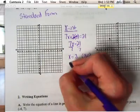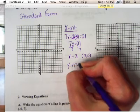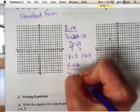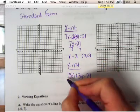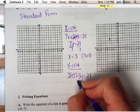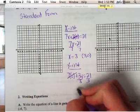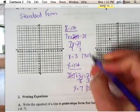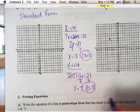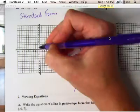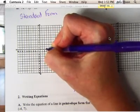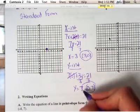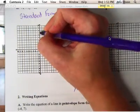Then you have your Y intercept. For the Y intercept, you plug 0 in for X. So you get 7 times 0 plus 3Y equals 21. Again, this term zeroes out. Divide both sides by 3, and you get Y equals 7. So when X is 0, Y is 7. So these are the two points you're going to put on your graph: the first one at 3, 0, and the Y intercept on the Y axis at 7.